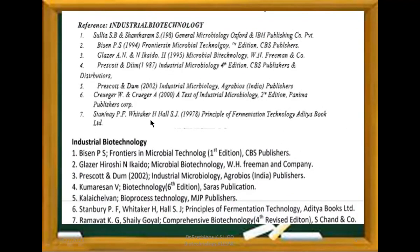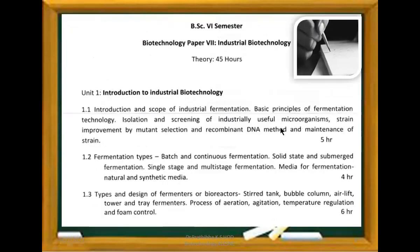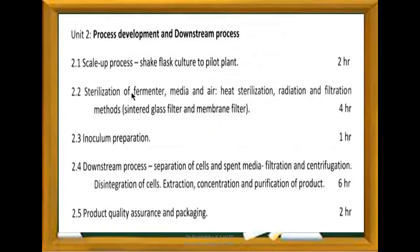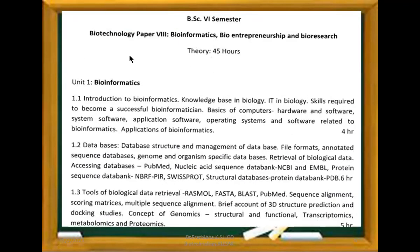Uses of enzymes include minerals, detergents, leather industry, food and beverage industry, and pharmaceutical industry. This completes Unit 3. You can see the reference books listed — please take a screenshot and refer to them, or access them in the college central library. Paper 7, Industrial Biotechnology, covers: Unit 1 — Introduction, Unit 2 — Process Development and Downstream Processing, Unit 3 — Industrial Production of Microbial Products.